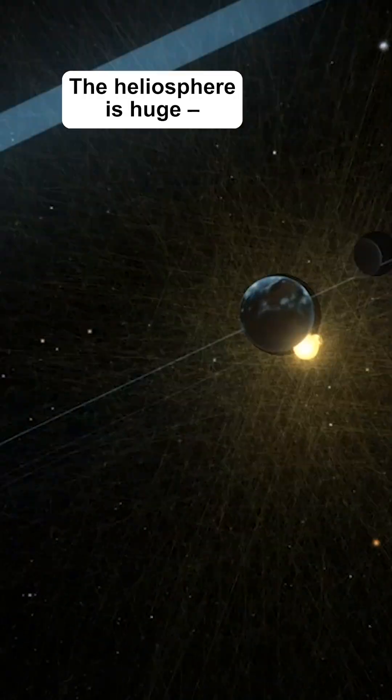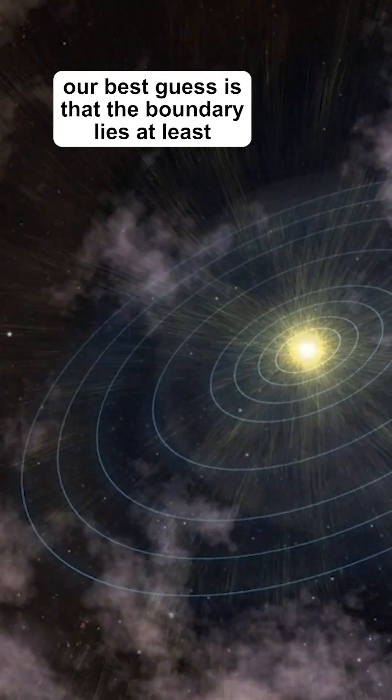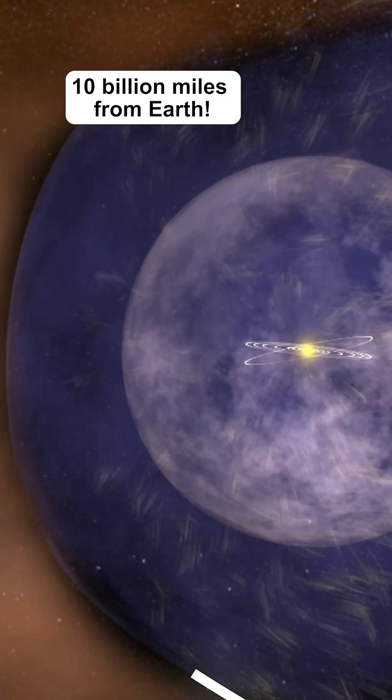The heliosphere is huge. Our best guess is that the boundary lies at least 10 billion miles from Earth.